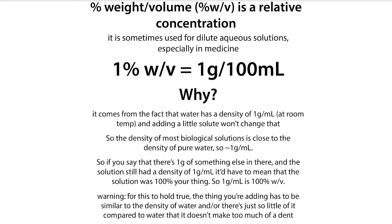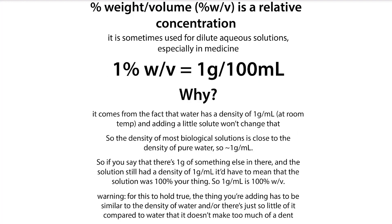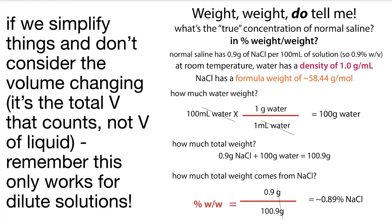If we want to look at an example, we can look at a common one in medicine: normal saline, a saltwater solution typically reported as 0.9% weight volume. Going back to what percent weight volume means, 1% weight volume tells us we have 1 gram per 100 mils. So 0.9% would be 0.9 grams per 100 mils. If we simplify — not accounting for density or volume changes — and we had 100 grams of water with 0.9 grams of sodium chloride added, we'd have 100.9 grams total, with 0.9 grams coming from the sodium chloride, giving about 0.9%.